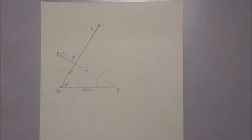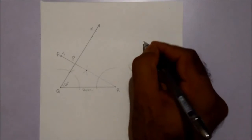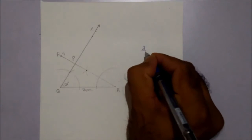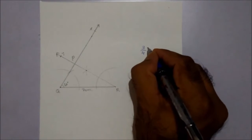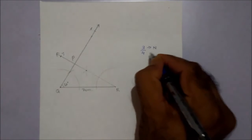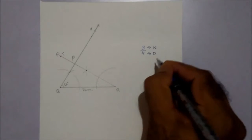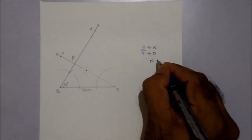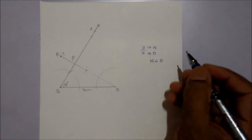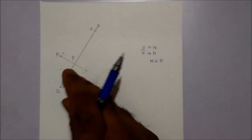Now the scale ratio is given 3 upon 4. Numerator is less than denominator, so our new triangle will be smaller.